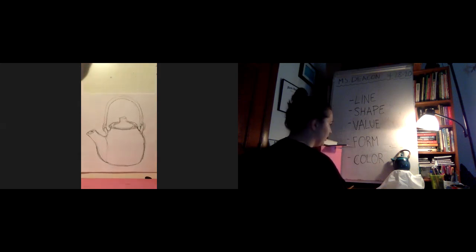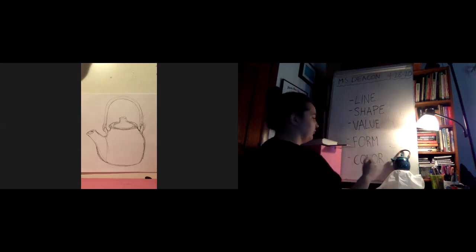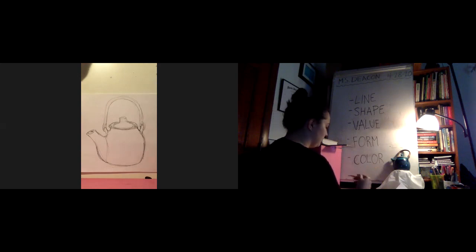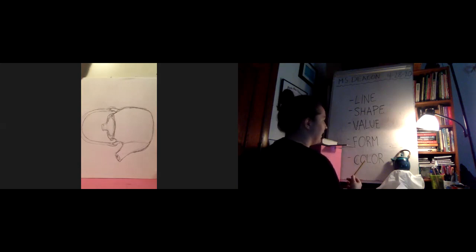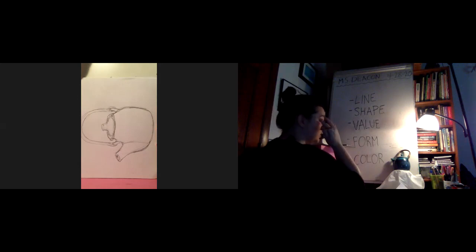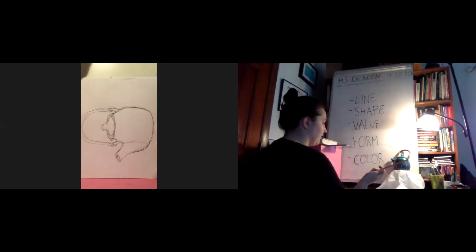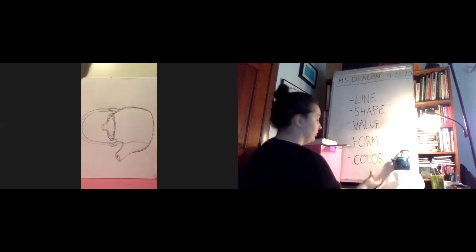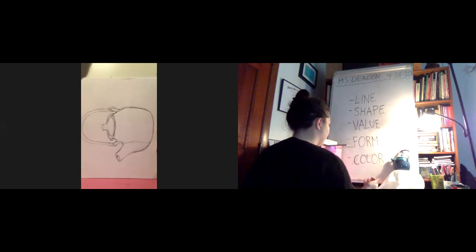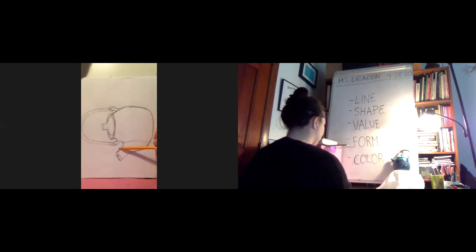I have a rough contour drawing of the teapot — not a blind contour because I was looking back and forth between the object and the paper. A blind contour is when you look only at the teapot and not your paper; that's more of a warm-up for hand-eye coordination. I have some lines here that have turned into shapes because I've connected them. The next thing to investigate is value. I'm going to add value and form using pencil, then go back with a thin black marker to emphasize certain lines and shading, and then add color on top.